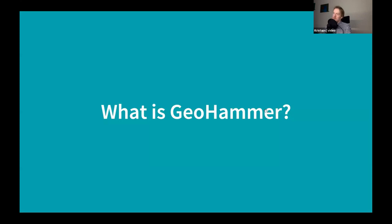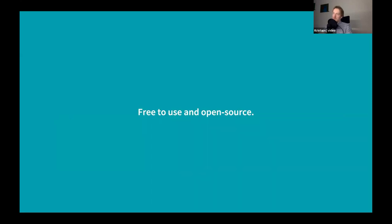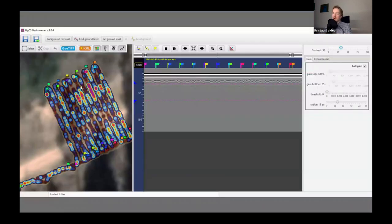Now let's talk about GeoHammer. GeoHammer is essentially a simple tool you can use to quickly assess and pre-process GPR data. Importantly, we've made GeoHammer free to use and open source — it's available on GitHub, you can download it and play around with it now or after the webinar. This screenshot shows the interface, which I'll demonstrate live during the workshop part.